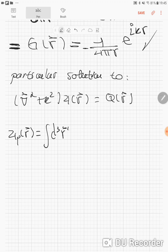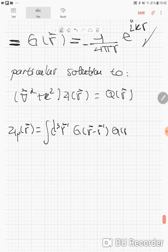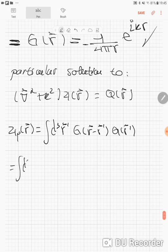Now we're going to replace everything we know here. The integral over d³r prime, the Green's function has a minus sign here.